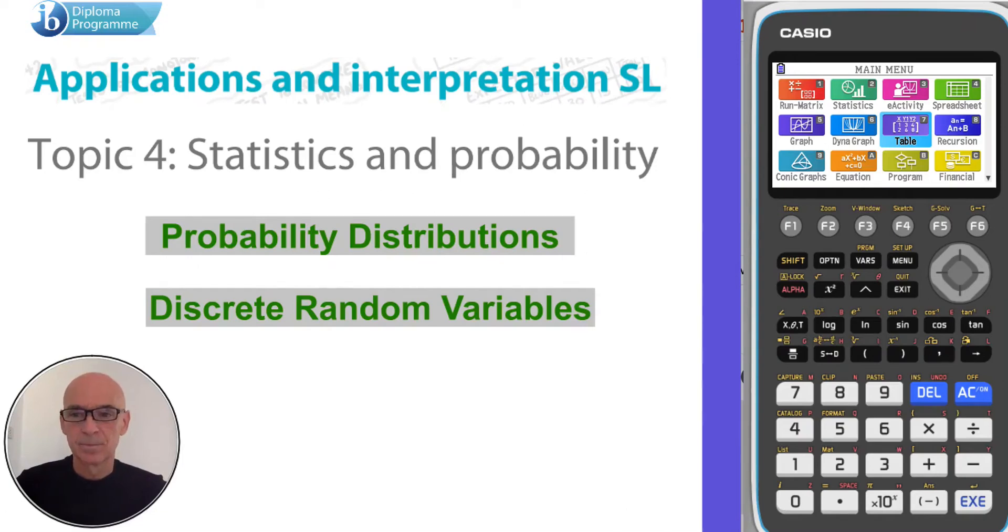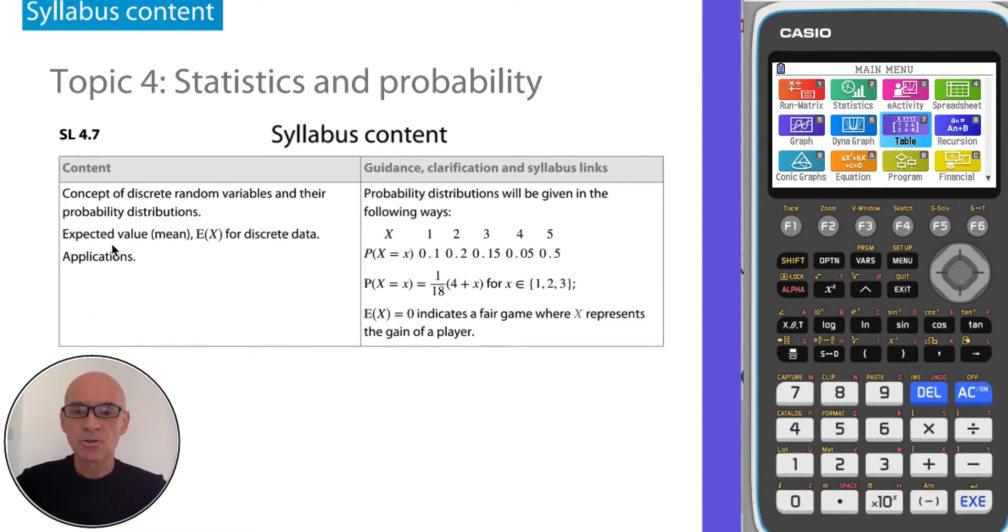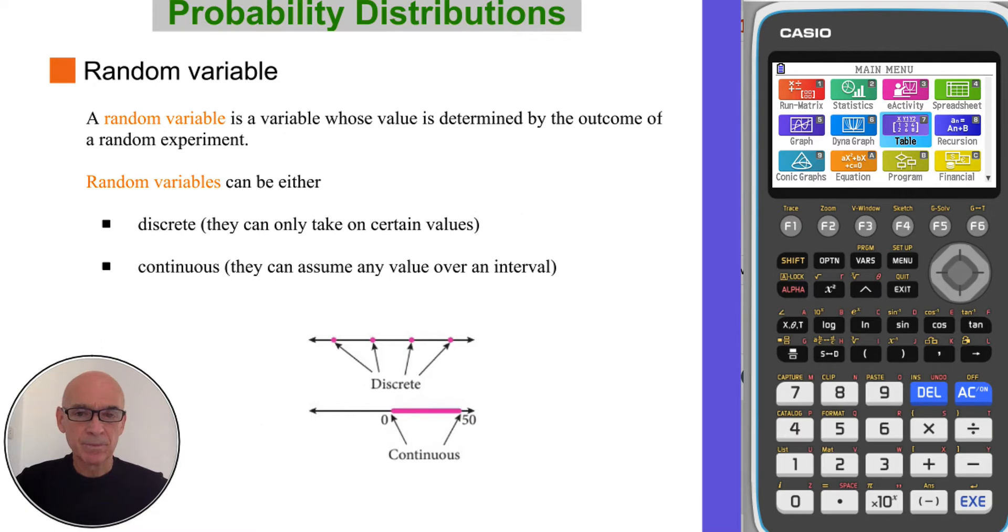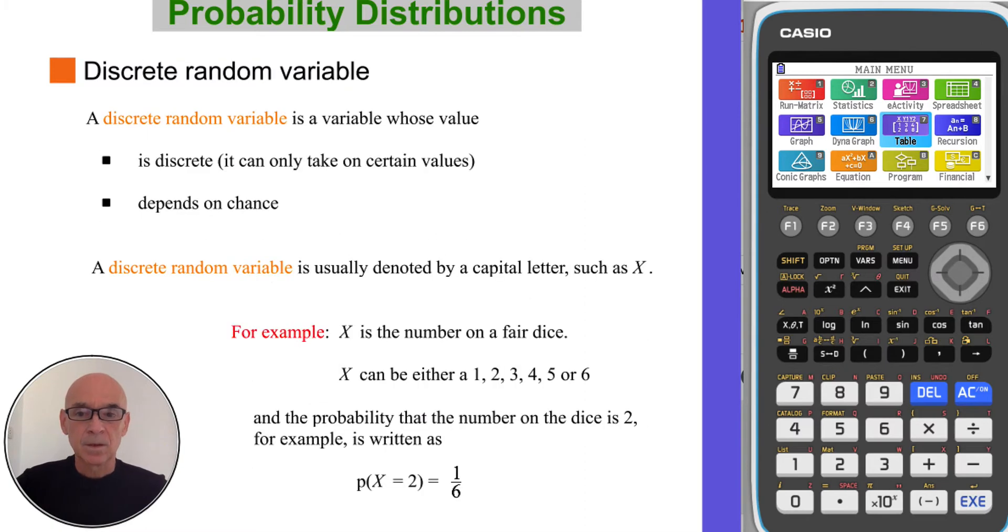Hello. Today I'm going to talk about probability distributions for discrete random variables as shown in the syllabus. A random variable is a variable whose value is determined by the outcome of a random experiment. Random variables can either be discrete or continuous. Discrete meaning they can take on only certain values. Random means the outcome depends on chance.